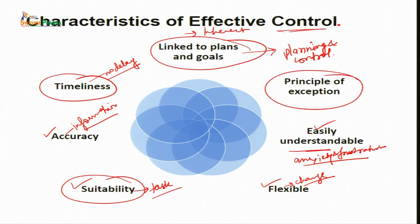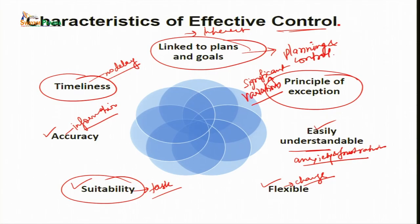The last parameter for effective control is the principle of exception. The control system must be designed so that only significant variations requiring corrective actions are brought to the notice of the manager, so that unnecessary time is not wasted on redundant activities. Managers must not be troubled as long as everything is comfortably within the standards.